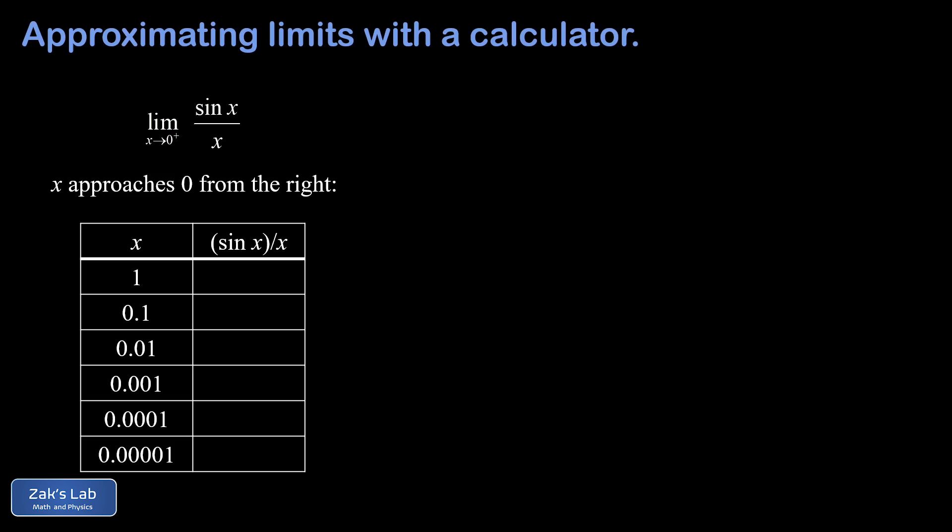And again, it's important that your calculator is set in radians for this. And we just start plugging in some numbers. So the first thing we have to calculate is the sine of one all divided by one, and this time just keeping a little extra precision we get about 0.8415. Then we plug in our next closest value of x and we have to compute sine 0.1 all divided by 0.1, and this gives us about 0.9983.